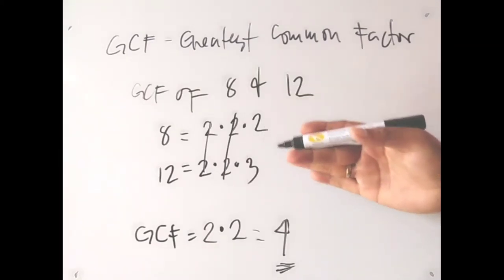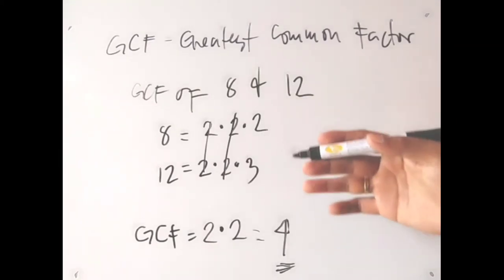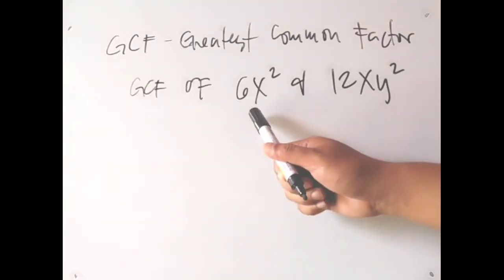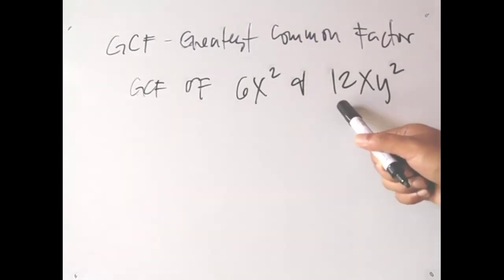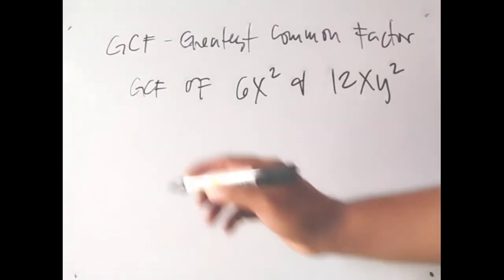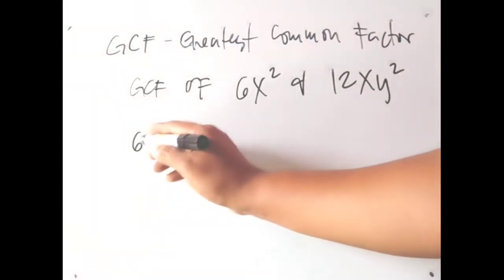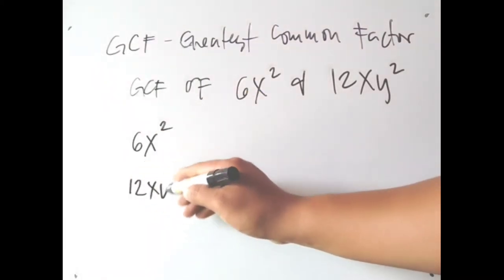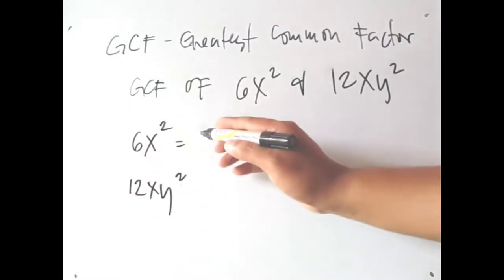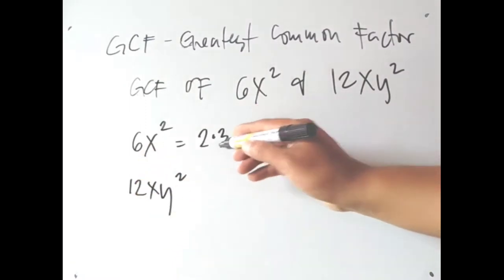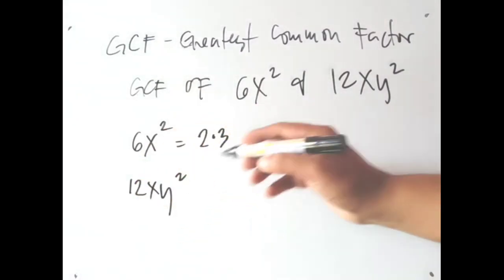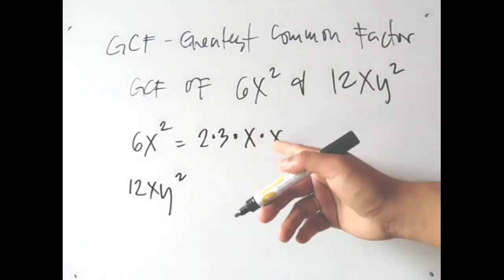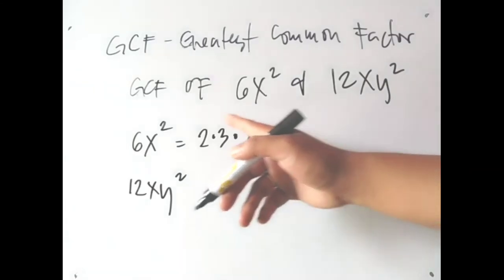We apply this same process to find the GCF of polynomials. For example, find the GCF of 6x² and 12xy². The procedure is to use prime factorization of the two polynomials. For 6x²: 6 is 2 times 3 (prime factors), and x² is x times x — recalling the law of exponents, same base means we add exponents.